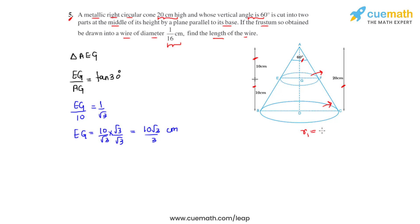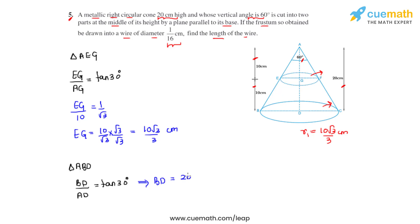In a similar manner, we find the radius of the lower circular end. Focusing on triangle ABD, we take the ratio of sides BD and AD, which equals tan 30°. Substituting the values, BD = 20/√3. On rationalization we get r2 = 20√3/3 centimeters — the radius of the lower circular end of the frustum.